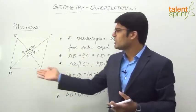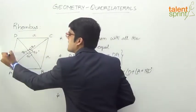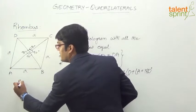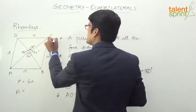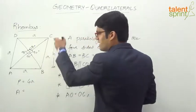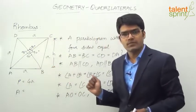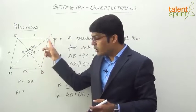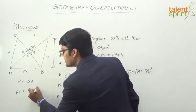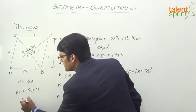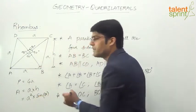Now, area and perimeter. Since all four sides are equal, if each side is A, the perimeter is 4A. For the area, it is base into height — if the height is H, the vertical distance between the two parallel sides AB and CD, the area is A into H. Alternatively, area equals the product of two adjacent sides into the sine of the included angle, which gives A squared into sine of angle B.